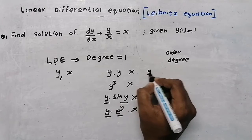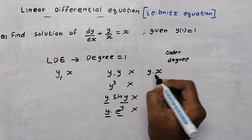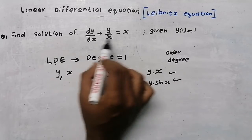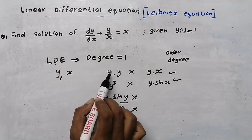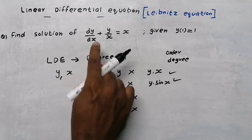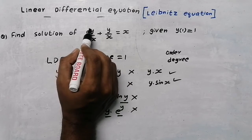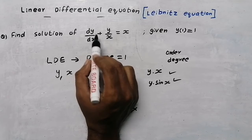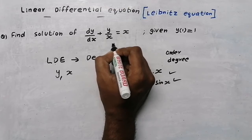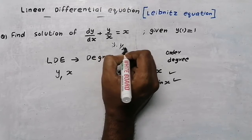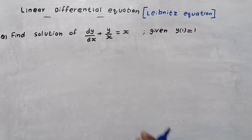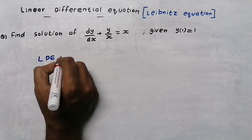Also, y×e^y is not allowed. However, y×x or y×sin(x) are acceptable because the variables are different. If anywhere in the equation the dependent variable is in a product form, it is not a linear differential equation. In our equation, the degree is one and y is multiplied by 1/x — the variables are different — so this is a linear differential equation.